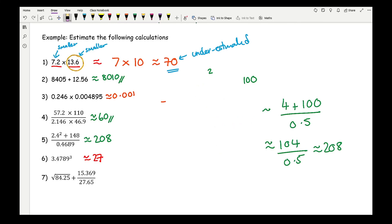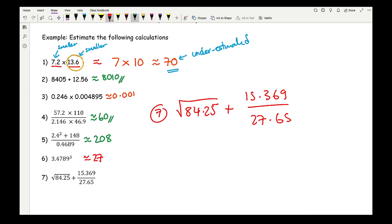Then finally, moving on to question 7. Let me just get rid of all of this. Now when we move on to question 7, I've got the square root of 84.25 plus 15.369 over 27.65. Well, looking at this number, as it's a square root, I've got to look at the nearest square number, so that's going to be roughly the square root of 81. Looking at 15.369, that's closer to 20, and this is going to be over 30.